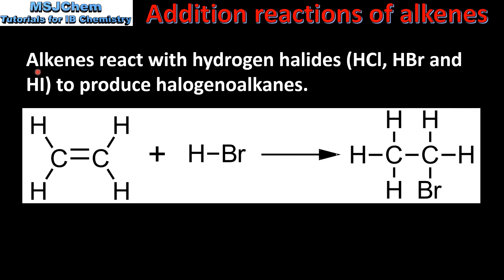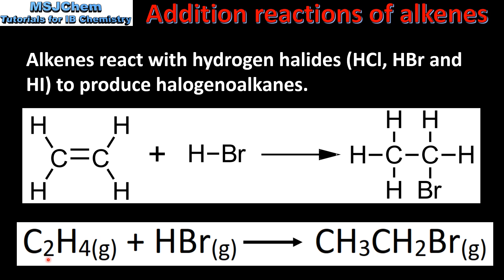Alkenes react with hydrogen halides such as hydrogen chloride, hydrogen bromide and hydrogen iodide to produce haloalkanes. Here we have ethene reacting with hydrogen bromide to form bromoethane, and here we have the equation for the reaction.